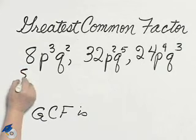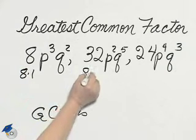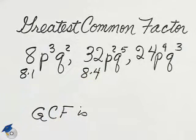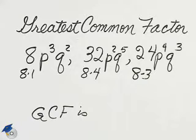8 is 8 times 1, 32 is 8 times 4, 24 is 8 times 3. Then the greatest common factor of the coefficients is 8. Looking now at the letters,